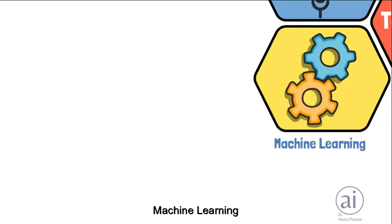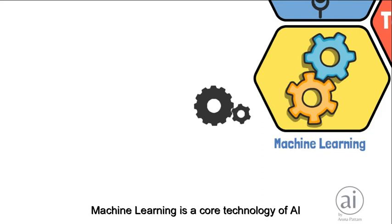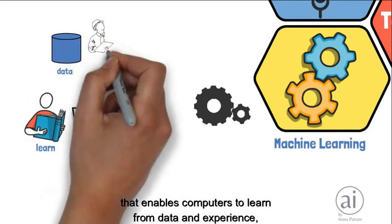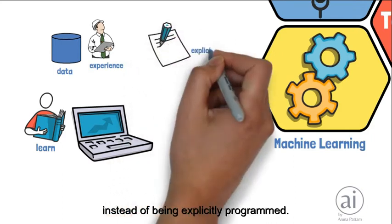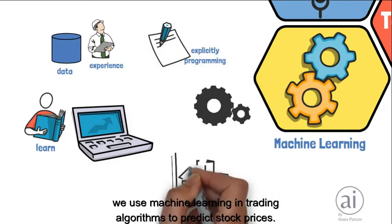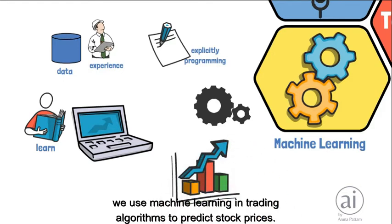Machine learning is a core technology of AI that enables computers to learn from data and experience instead of being explicitly programmed. For example, we use machine learning in trading algorithms to predict stock prices.